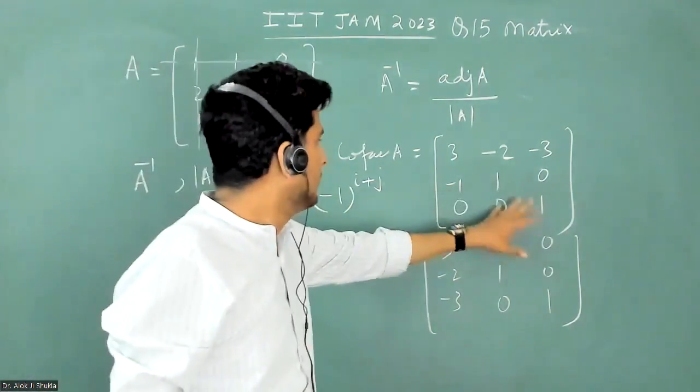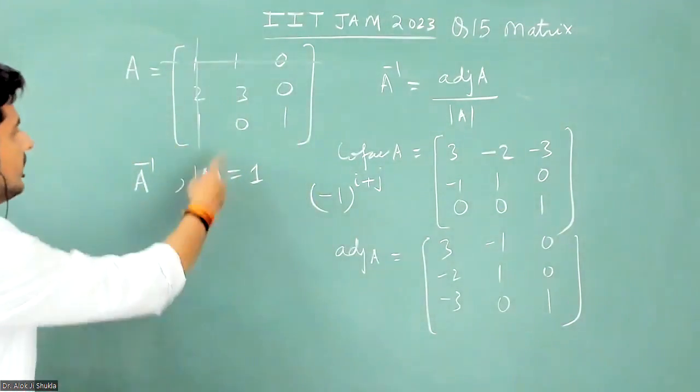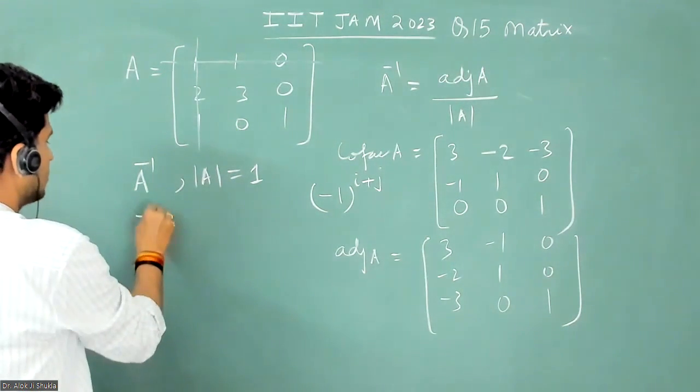Similarly, you write all the elements and then take the transpose. This is the adjoint A. The determinant of the matrix is already 1, so A inverse will be equal to adjoint A divided by determinant A, which is 1.